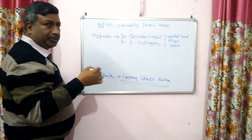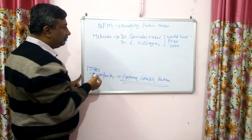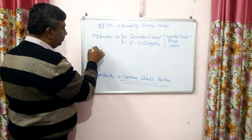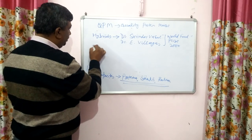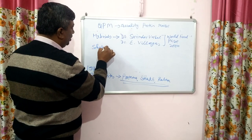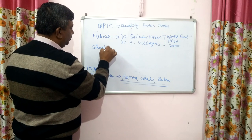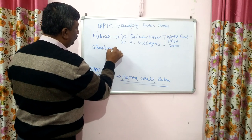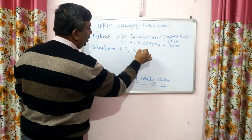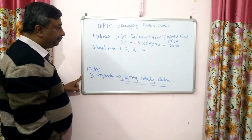For the development of QPM hybrids, they were awarded the World Food Prize, a very prestigious award, in the 2000s. The major hybrids developed were initially named Shakti-man 1, Shakti-man 2, Shakti-man 3, and Shakti-man 4.